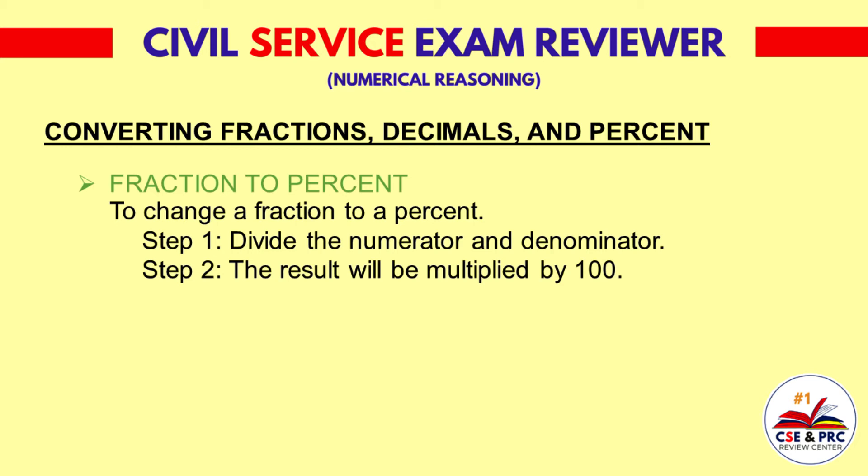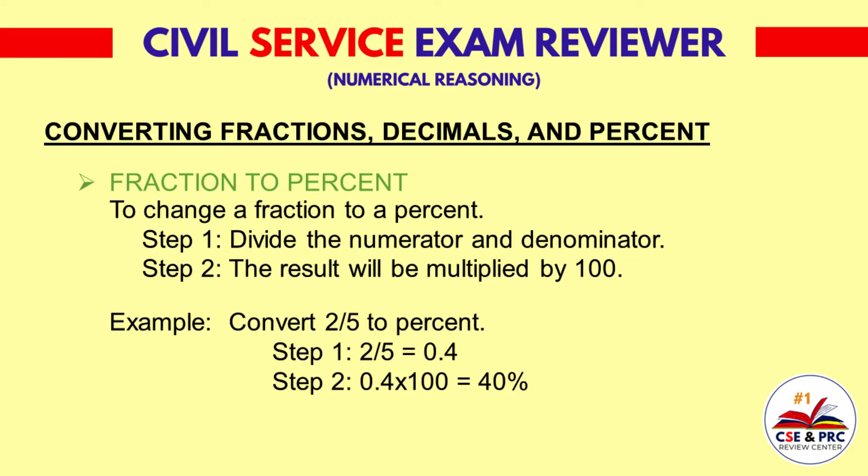Fraction to percent. To change a fraction to a percent, follow these steps. Step 1: divide the numerator by the denominator. Step 2: the result will be multiplied by 100. Let's consider this example.